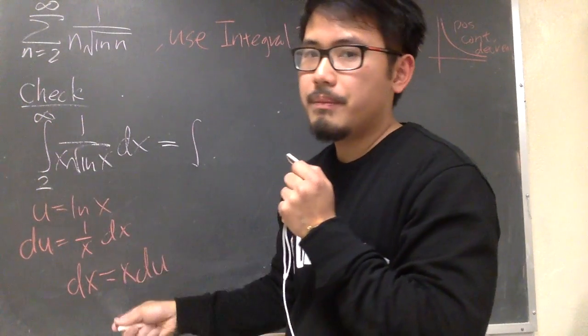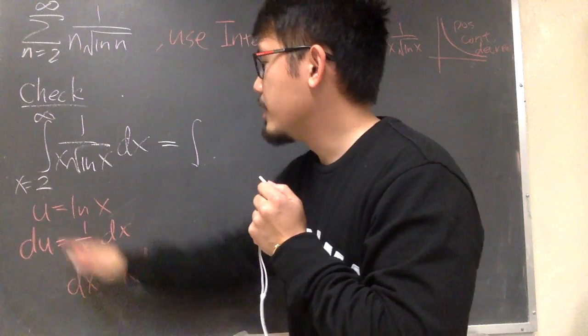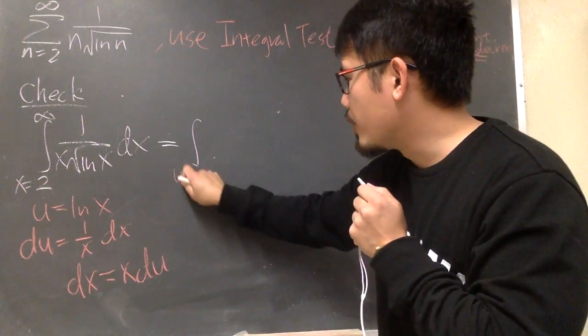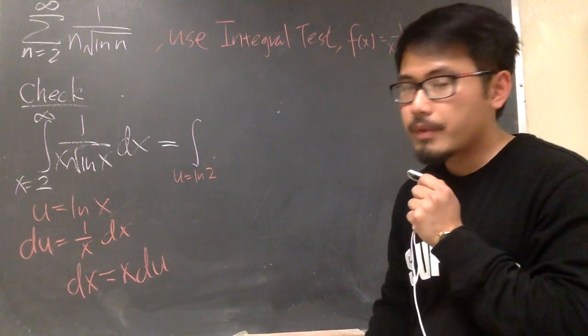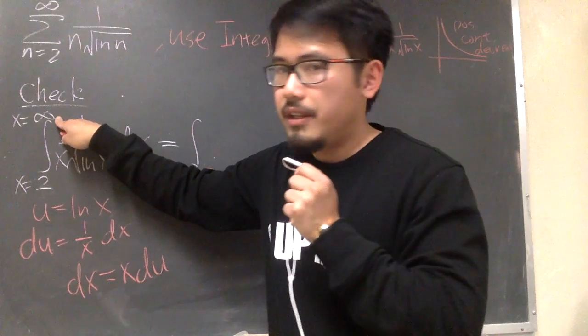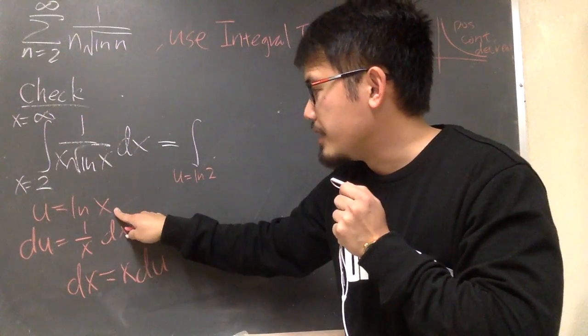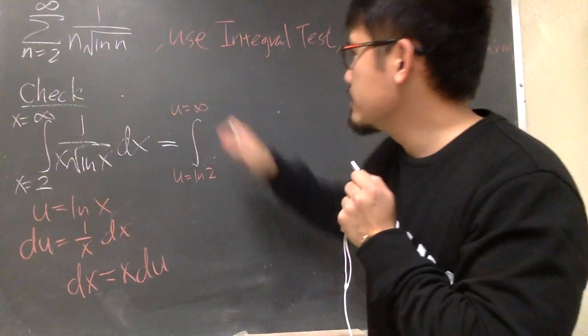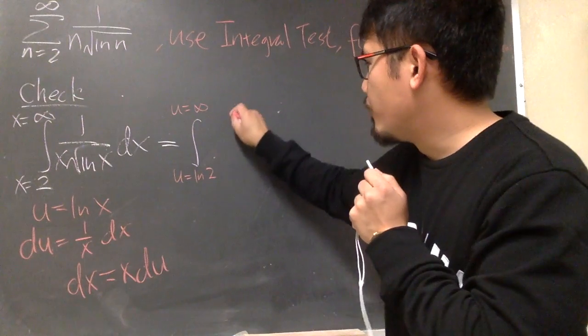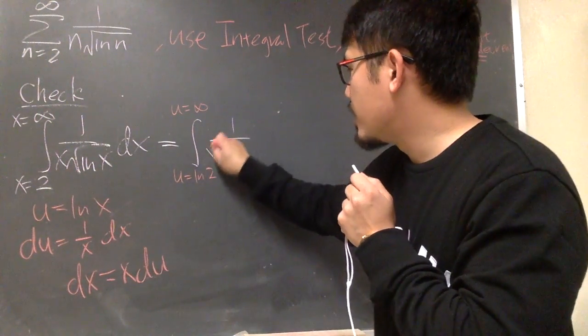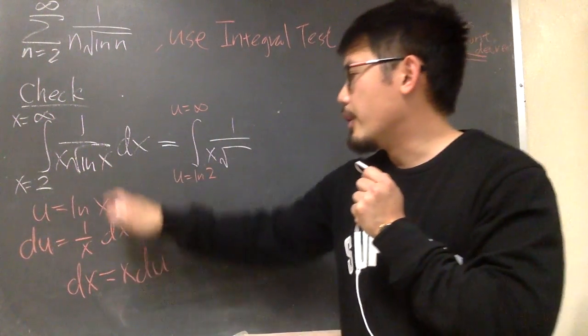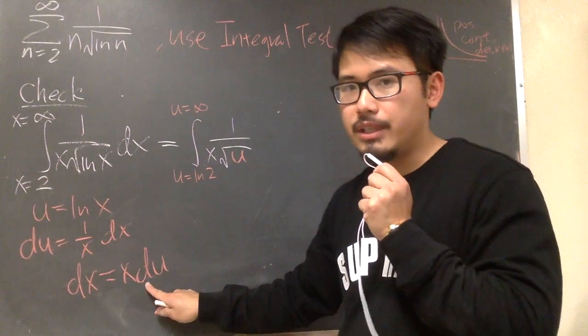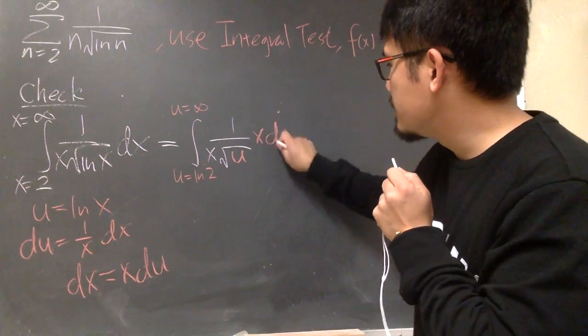Integral. Well, this is from 2 to infinity in the x world. This is x equals 2. When x equals 2, that means u equals ln 2. So in the u world, u is going from ln 2. When x is infinity, we know ln of infinity is also infinity. u is also infinity right here. And then inside, we have 1 over x is right here, square root, the ln is the u. So I'll put down the u right here. dx is x times du. u, x times du, like this.